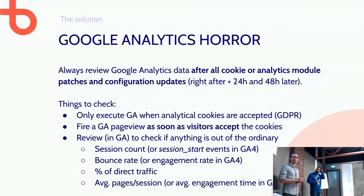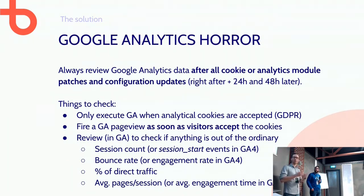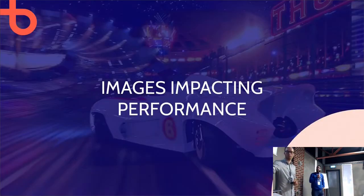Watch the session count, bounce rate, percentage of direct traffic, and average pages per session. If you see any of those suddenly shift, something is definitely wrong technically. In Google Analytics 4, bounce rate no longer exists, but you can look at engagement rate and similar metrics. To recap: whenever you do updates related to tracking, keep an eye on your analytics data. If something spikes, review it technically to find the cause.